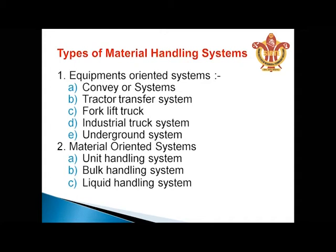The two types of material handling systems are: Equipment Oriented System — which includes Conveyor System, Tractor, Transfer System, Fork Lift Truck, Industrial Truck, and Underground System — and Material Oriented System — which includes Unit Handling System, Bulk Handling System, and Liquid Handling System.